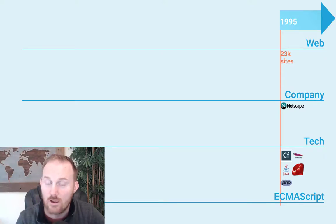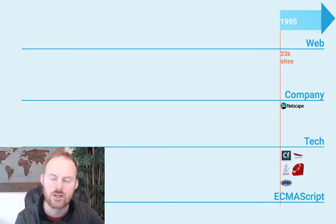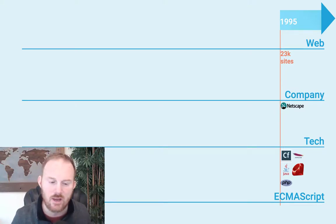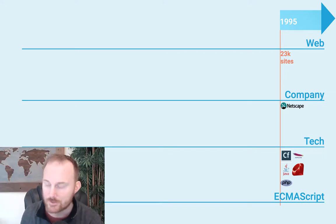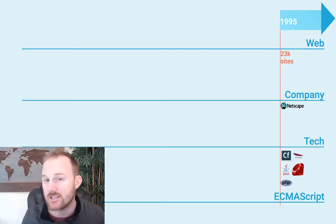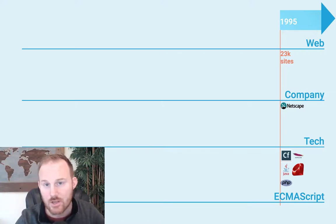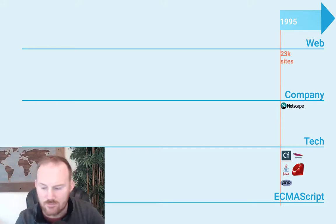Andreessen hires an engineer named Brendan Eich to make a scripting language, and he's got 10 days to do it because it is a rush order. He doesn't want to go after Java or C programmers, for a couple reasons. One, the web is a totally new thing — it's really hard to get computer science folks excited to migrate to the web when there's not really a web. And you can't hand Java to people who don't know how to program. So they wanted it geared toward designers, hobbyists, and amateurs.